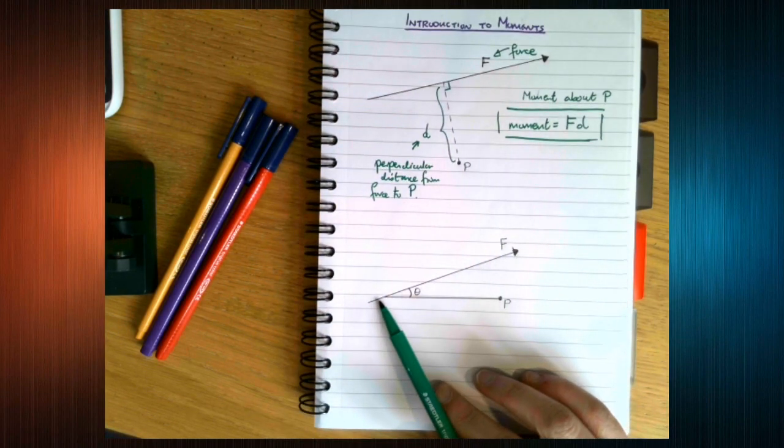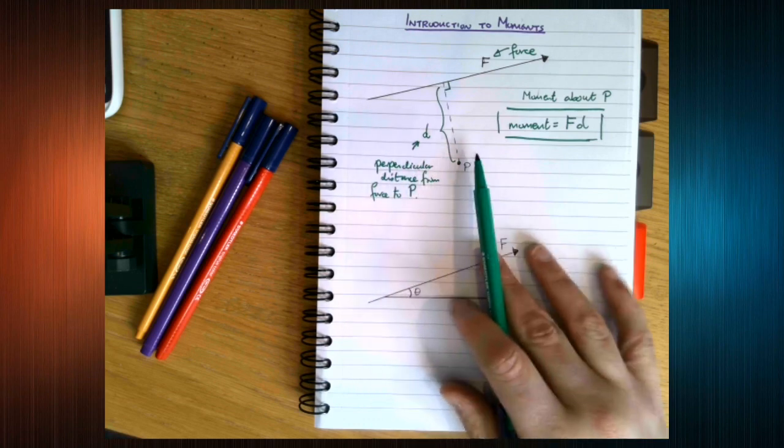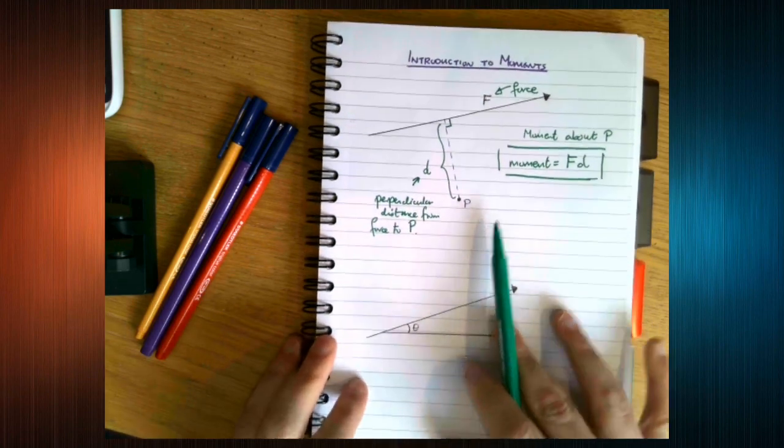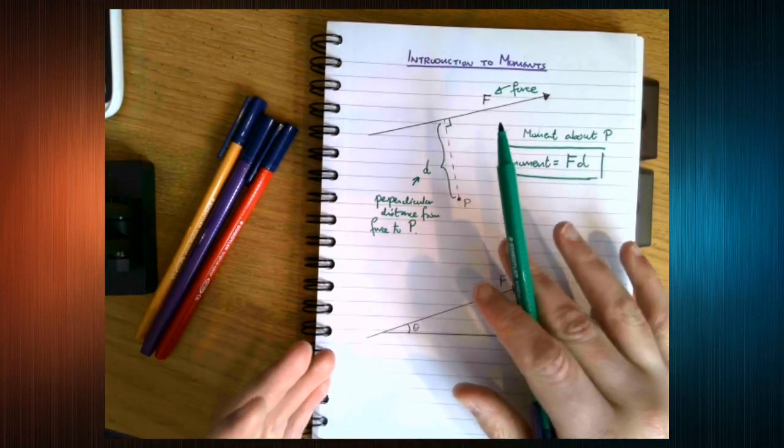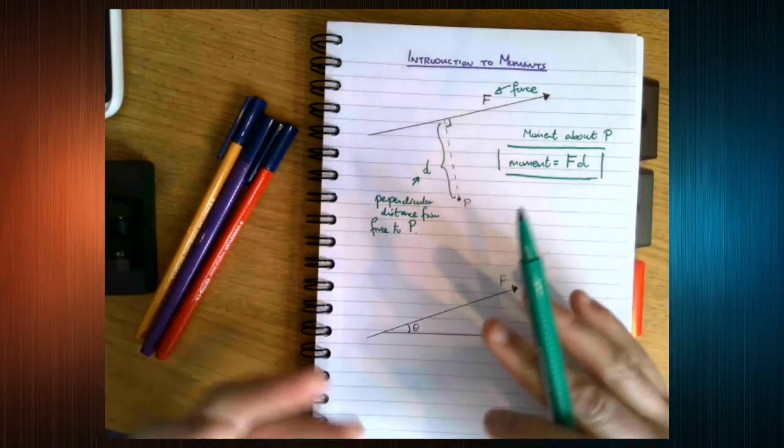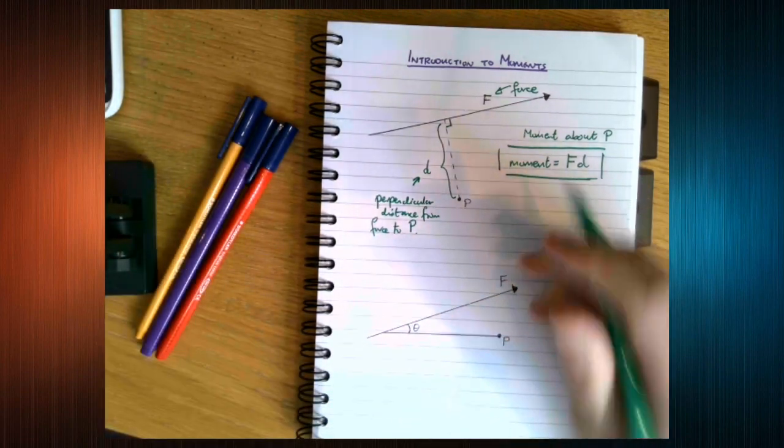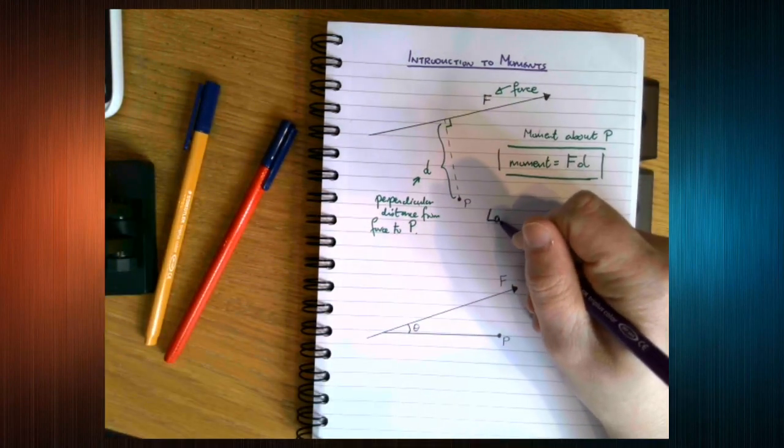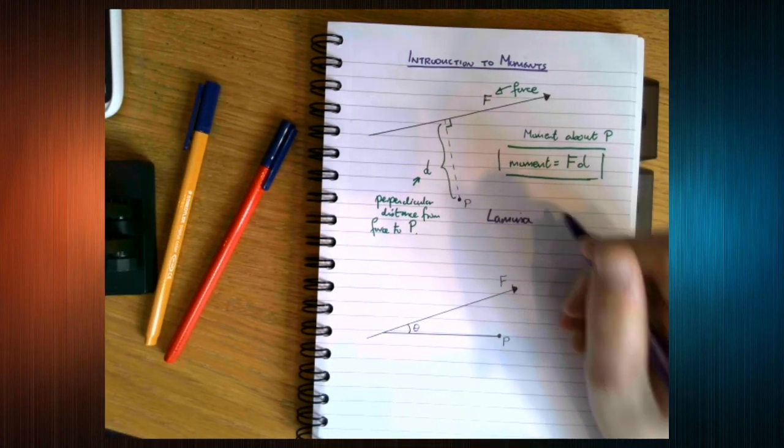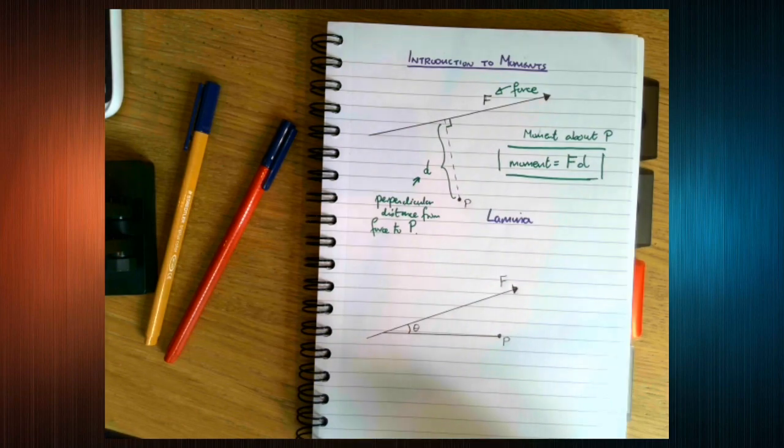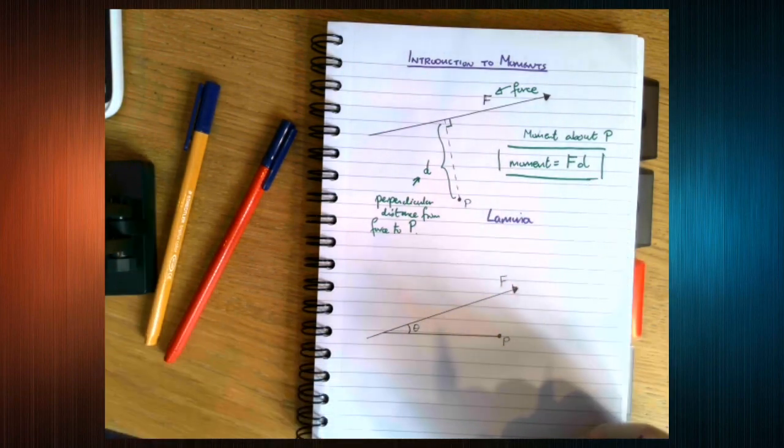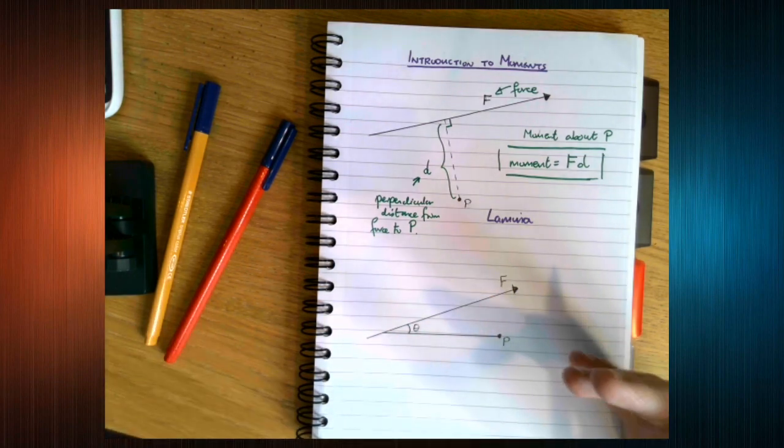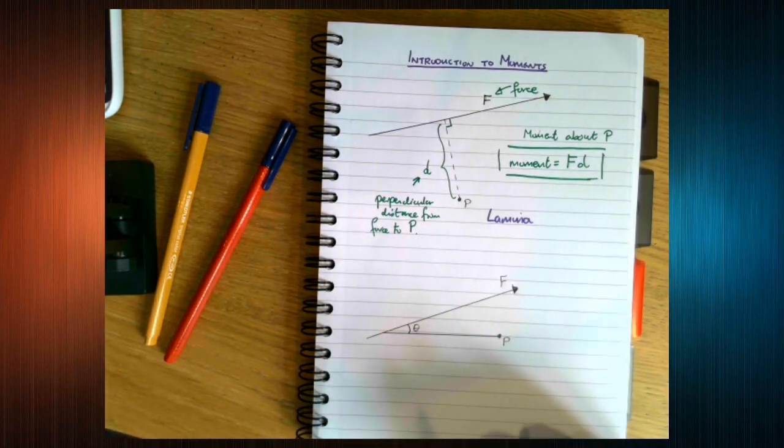Now typically, so this is often what we do when we're working on a piece of paper or a flat surface. Now a flat surface, we tend to call a lamina. A lamina is a flat surface that has no width. So you can think about this as a piece of paper, a solid, non-bendy piece of paper.